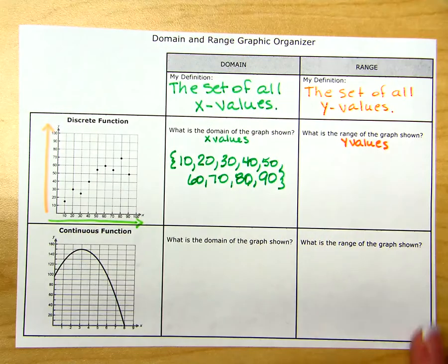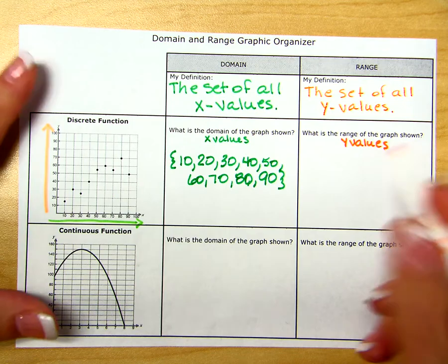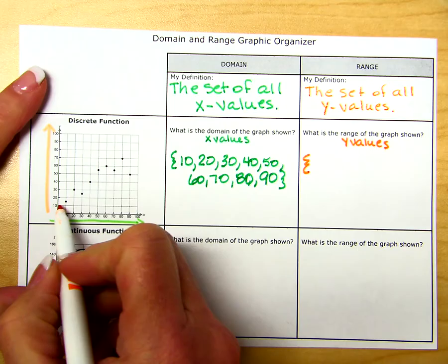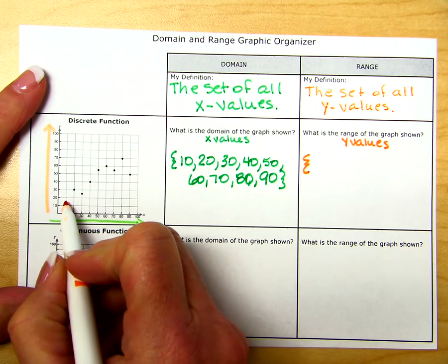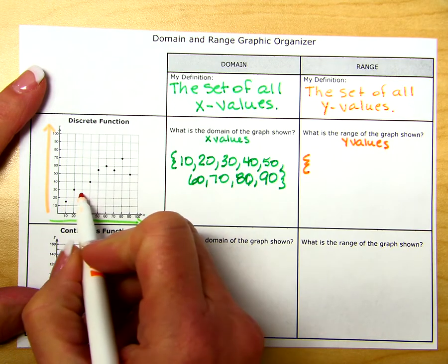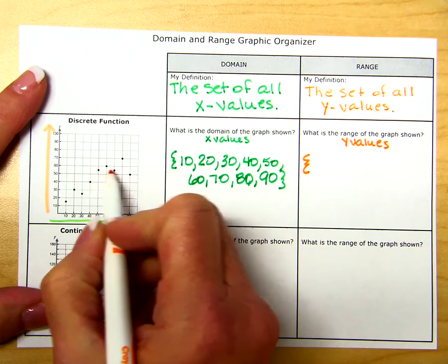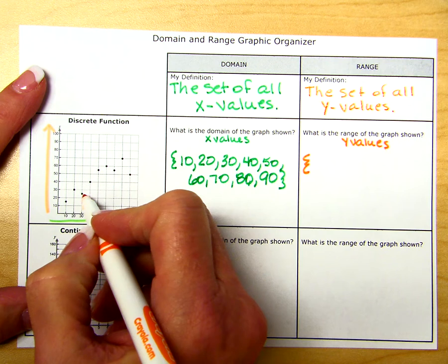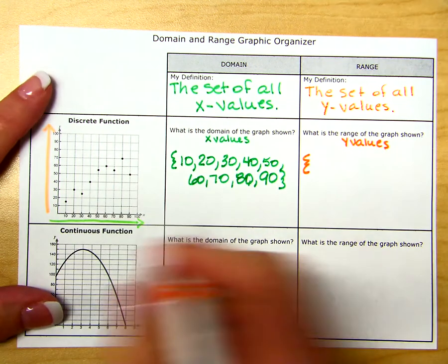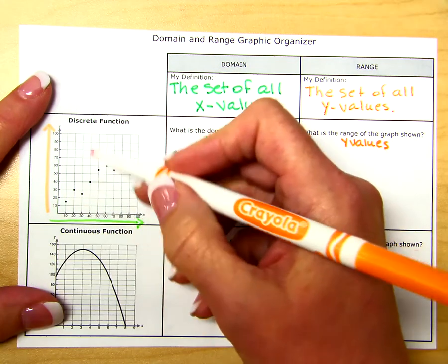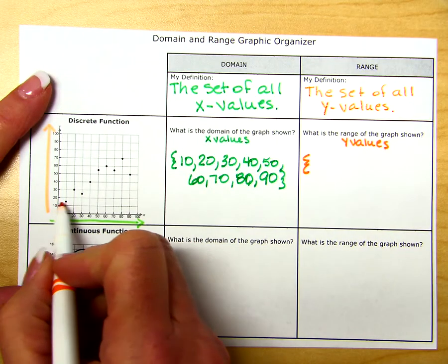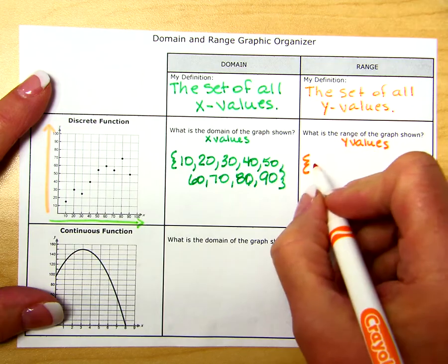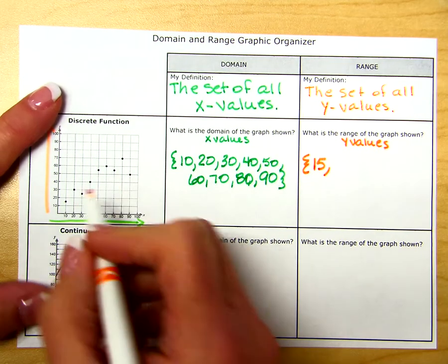For our y values for the discrete function, we will have a specific list because we have specific points. We'll be using values of 5 that fall between the 10 and 20, or the 20 and 30. Starting from the lowest and going to the highest, the first value we see for the range, bringing it across, is approximately 15.